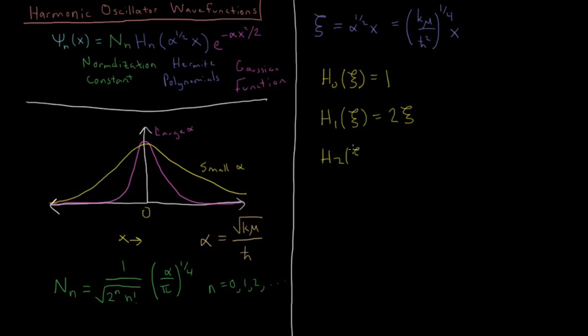And h2 equals 4xi squared minus 2. And you might see a trend starting to develop here. For each of these, for h_n, you get an nth order polynomial, and it only involves terms which are either even or odd for all the powers of it. And you're going to alternate between positive and negative.